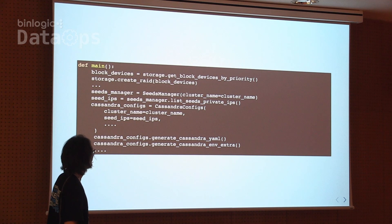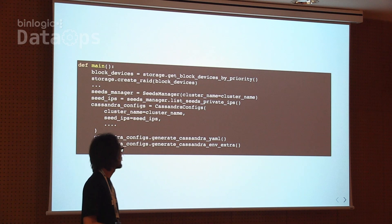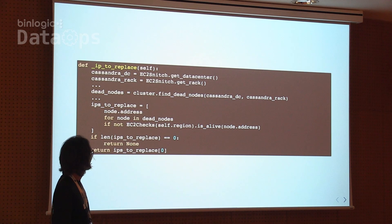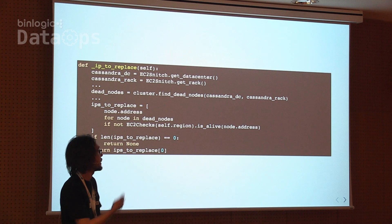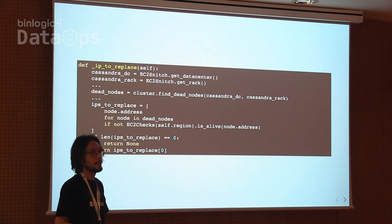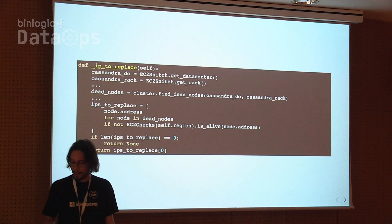Here are some code extracts from the project. When you start a new Cassandra node, first it creates a lock, then tries to find the seeds from the cluster and generates all the configurations. It tries to find if there is an IP it's meant to replace — it looks for all nodes in the cluster, and if any node is marked as down in the AWS API, it knows it's meant to be replaced. If there are no dead nodes, it means you're trying to increase capacity. Simple, but not easy to figure out at first.